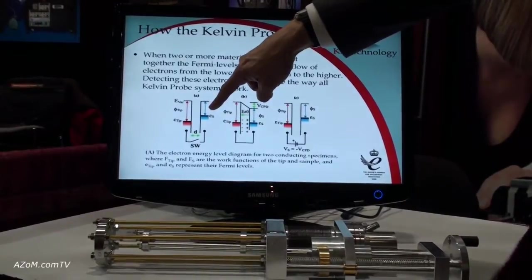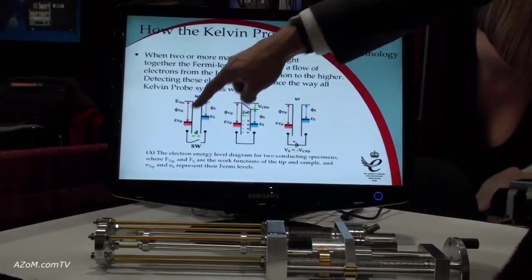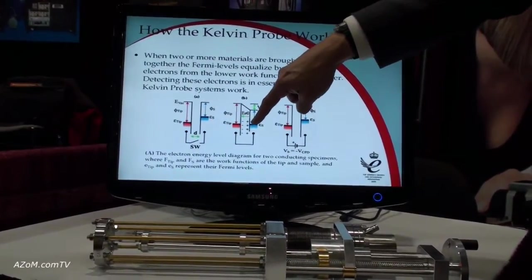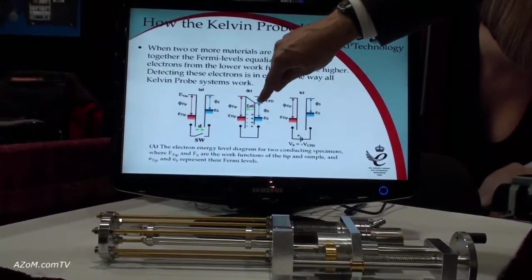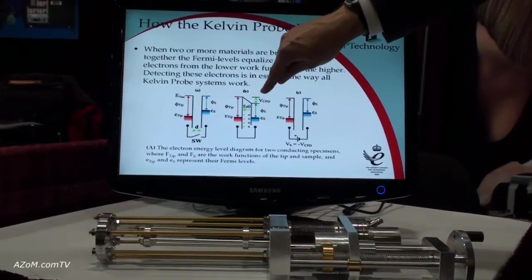Electrons run from the low work function sample to the large one, so this becomes positively charged, this becomes negatively charged, and we can see from this line here there's an electric field between the surfaces and a voltage between them.